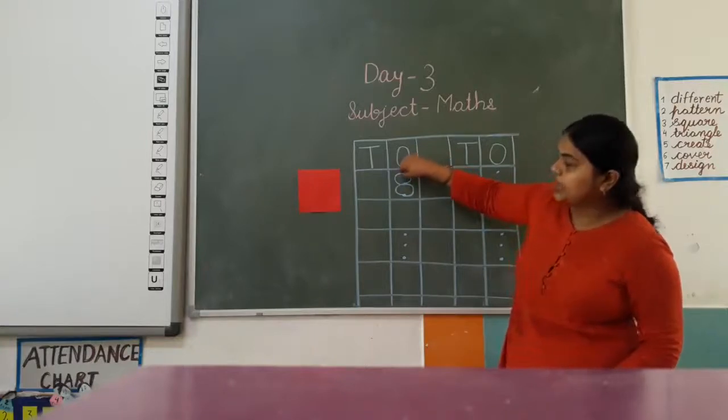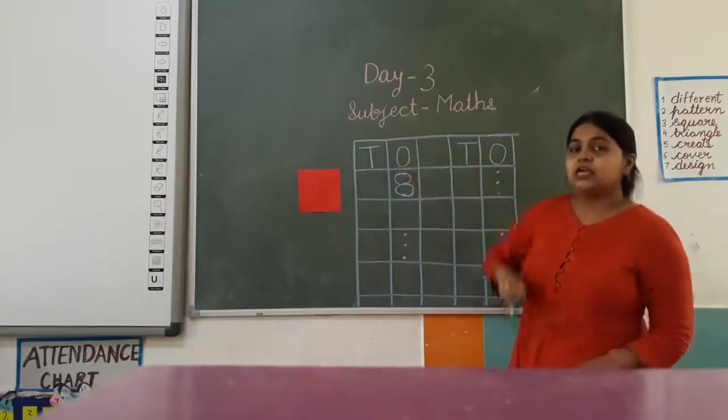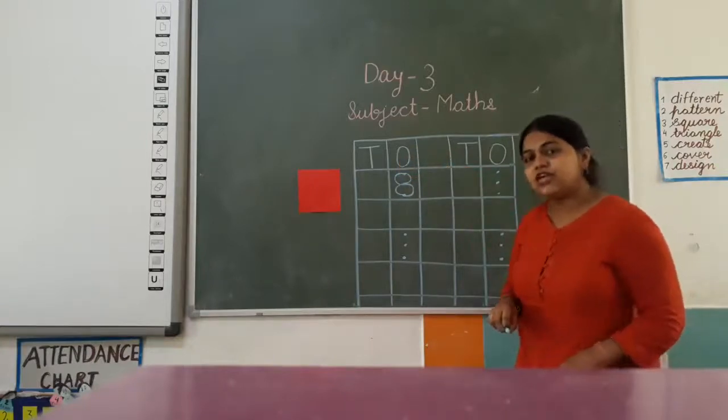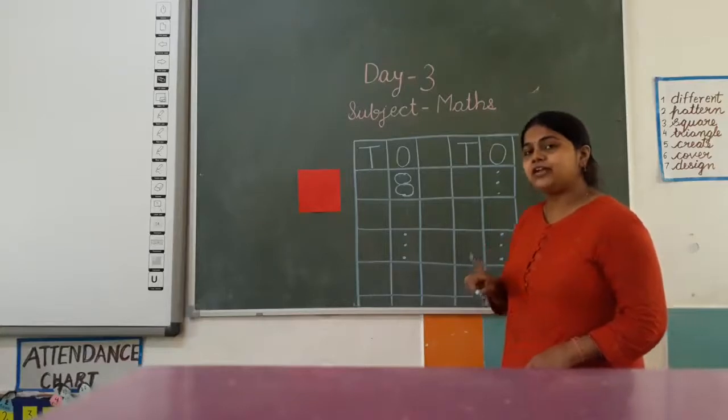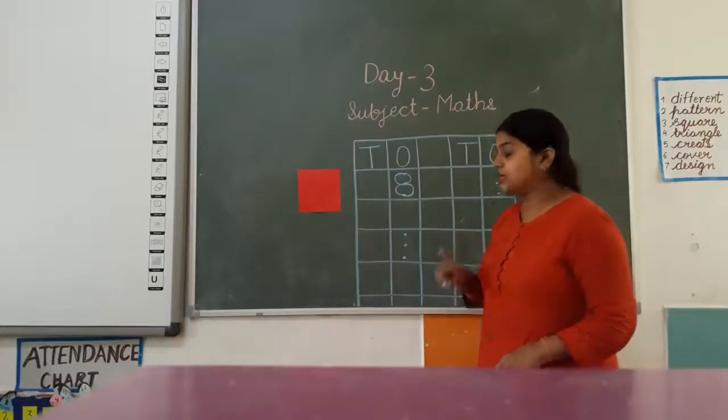And then from the middle go upward to the beginning point. Like this - 8. In this way you have to write number 8.